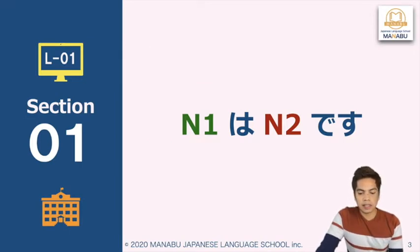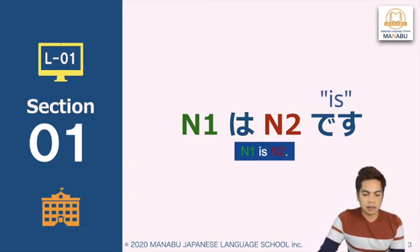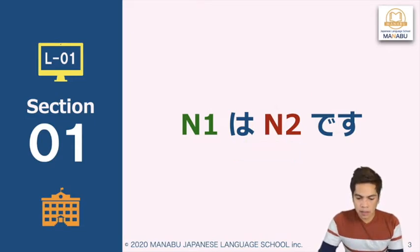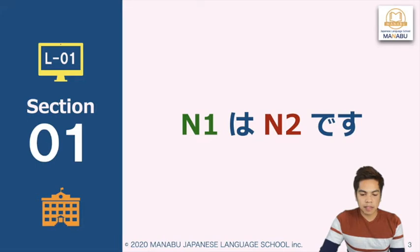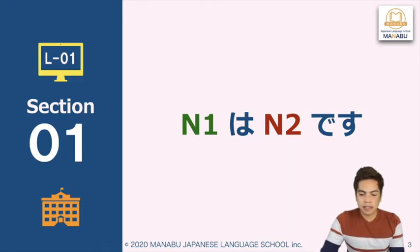Noun 2 is spelled as 'desu' and is also pronounced as 'desu.' Noun 2 will be the predicate of the sentence — this will describe our subject, Noun 1. Take note that this particle is the character 'ha' from the hiragana chart, but it is read as 'wa' because it is used as a particle. Also take note that 'desu' shows politeness to the listener.